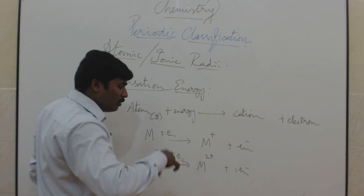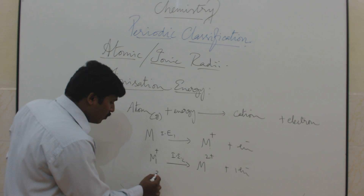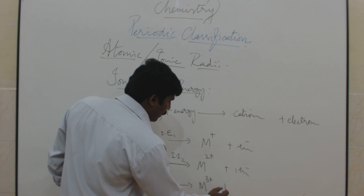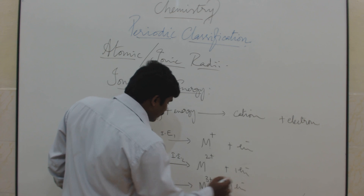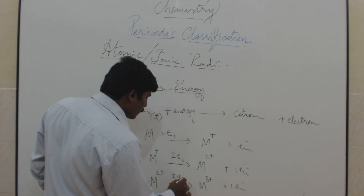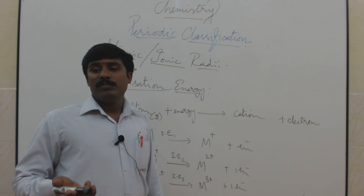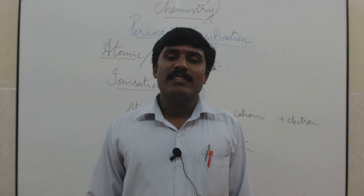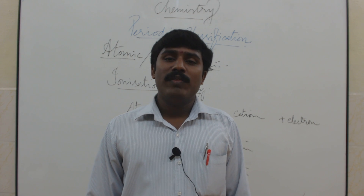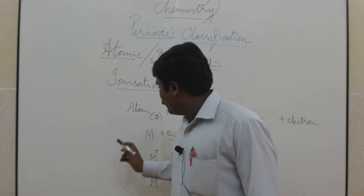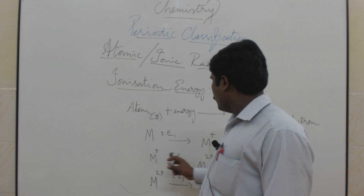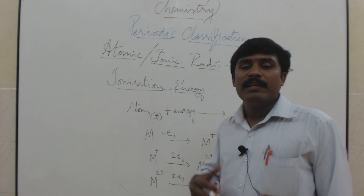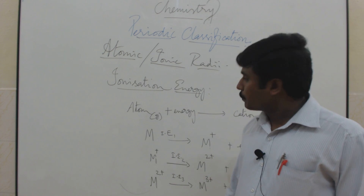When you remove one more electron from M²⁺, it becomes M³⁺. The energy required is the third ionization energy, which is greater than the second. Continuing this process — M → M⁺ → M²⁺ → M³⁺ — is called successive ionization potential, and each successive ionization energy is greater than the previous one.